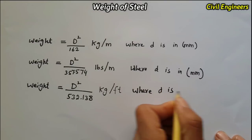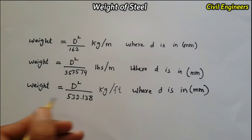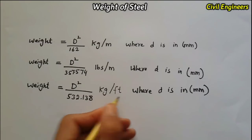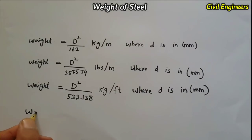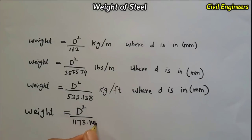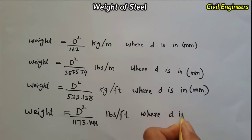And if you need to find out the weight of steel in lbs per feet — that is pounds per feet — use the formula: weight equals D squared divided by 1173.144. This will give us lbs per feet, where D is also in mm.